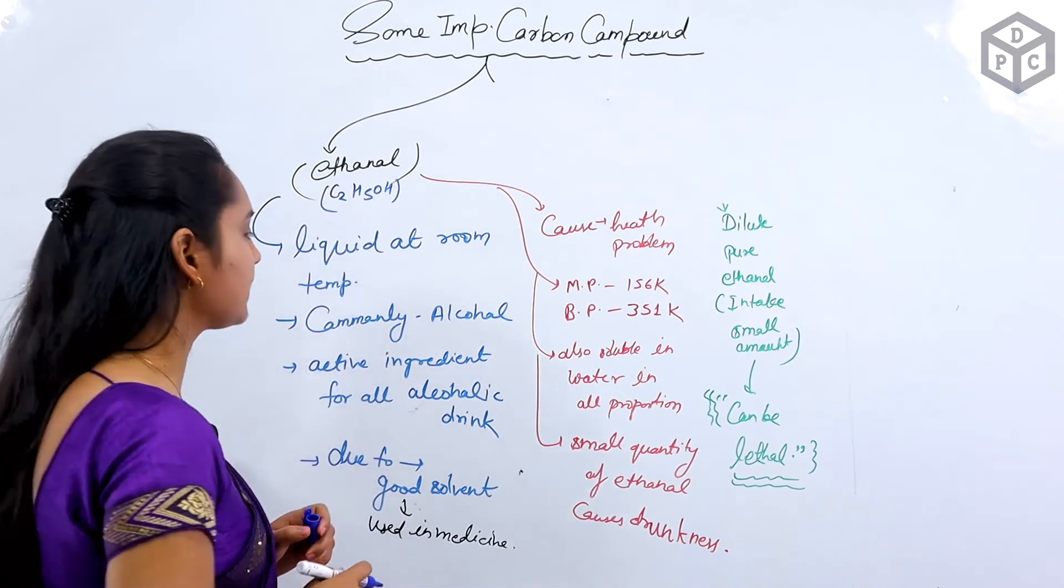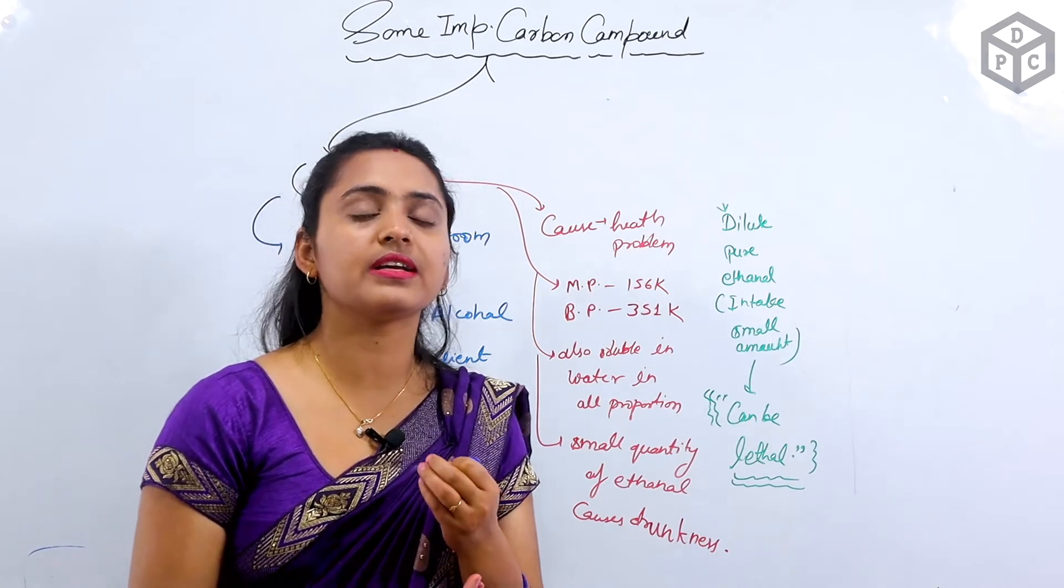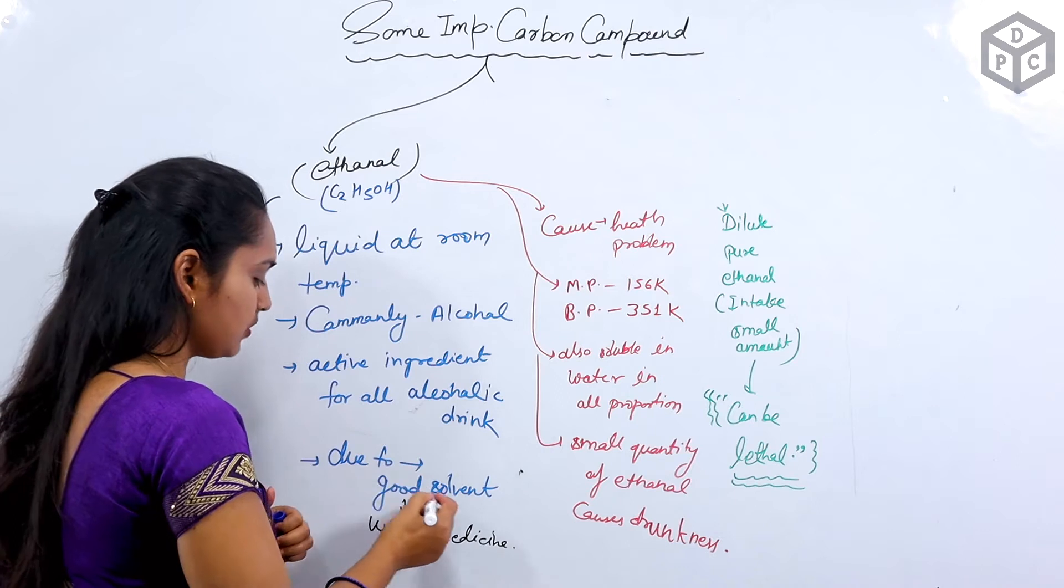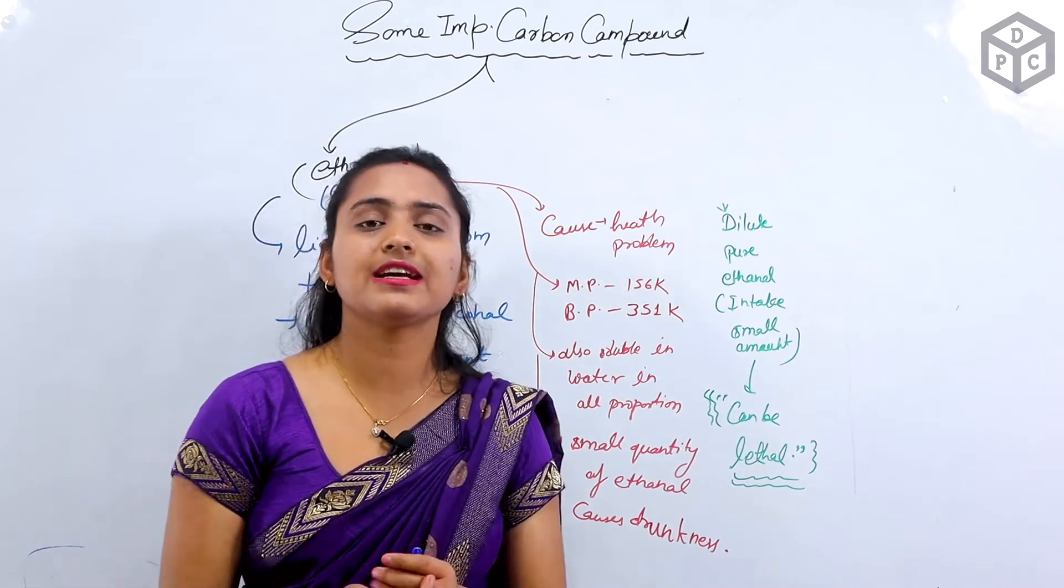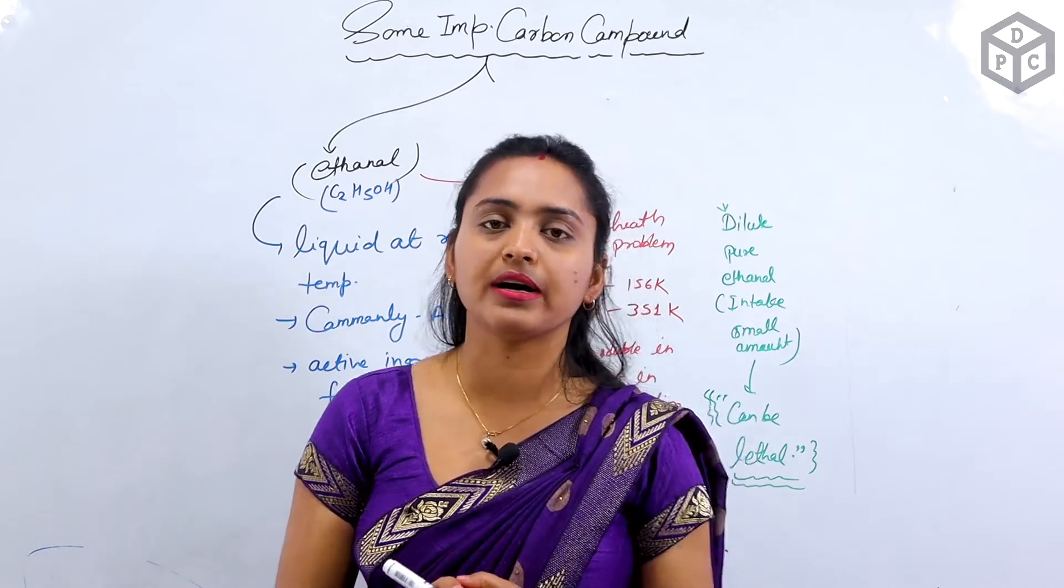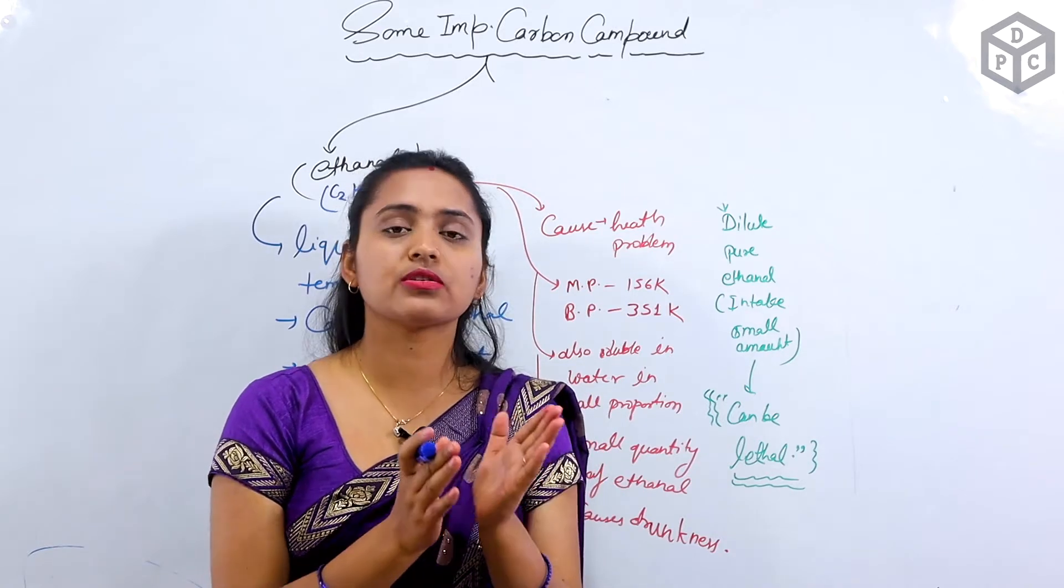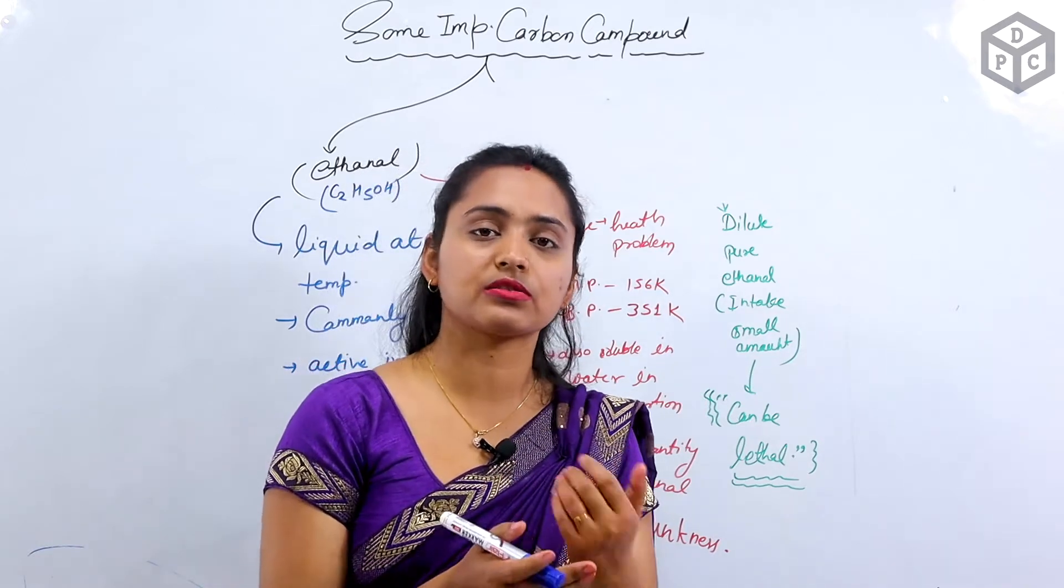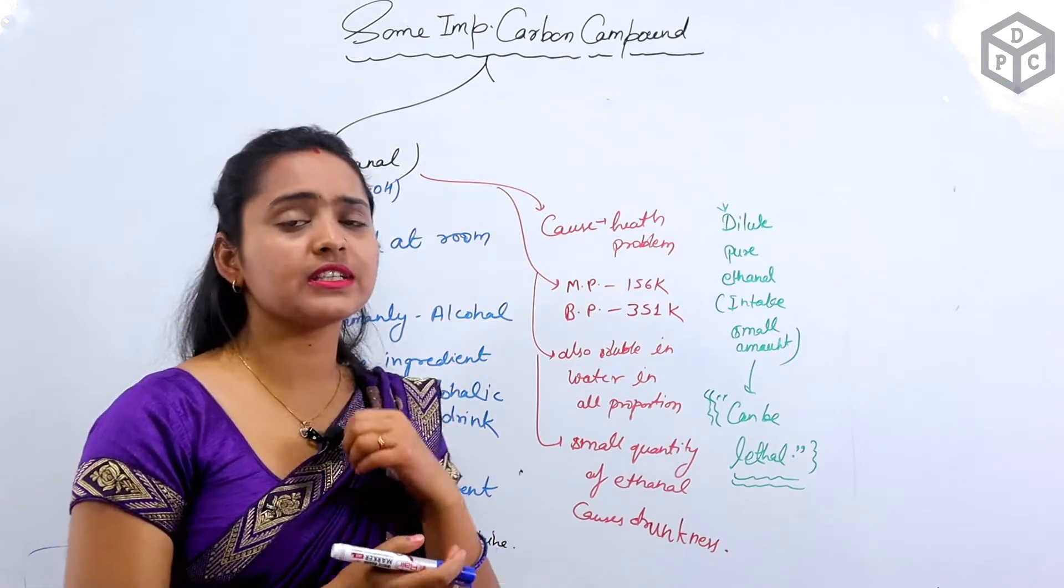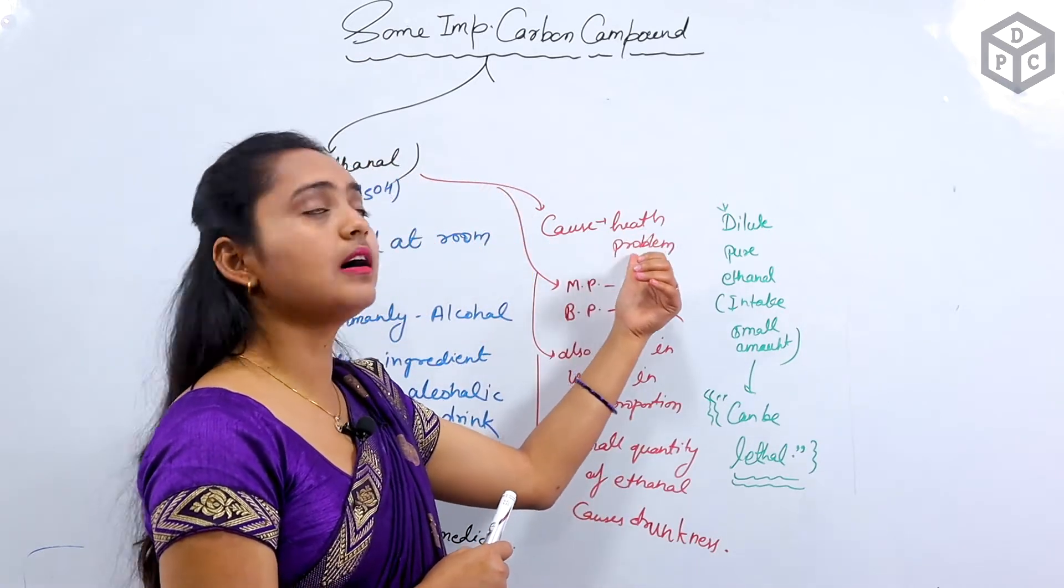Ethane plus OH gives ethanol. It is called ethanol or alcohol. In any kind of alcoholic soft drink, its active ingredient, the main thing, is ethanol. After this, it is used as a good solvent in medicine. It is a very good solvent. This is why it is used in medicine too. When we use cough syrup or a tonic, then some alcohol and ethanol are used. Why is this? Because it is a very good solvent. In many types of cough syrup, we use it mainly.